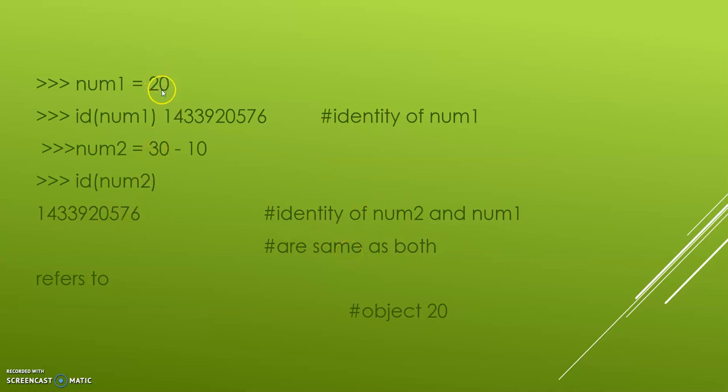Look at it. Here it is given as 20. Here it is given as 30 minus 10. It is written in different formats but it is the same. So this is what we mean in Python: everything is an object.